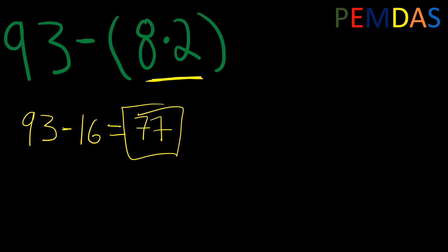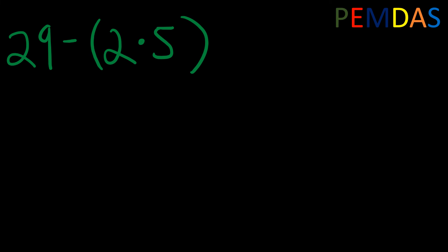Let's do another problem. Here we have 29 minus (2 times 5). Using the PEMDAS method, P is for parentheses, so first we have to work within the parentheses. We compute 2 times 5, and rewrite this equation as 29 minus 10. There are no exponents, no multiplication, no division, no addition — but there is subtraction. 29 minus 10 is 19.